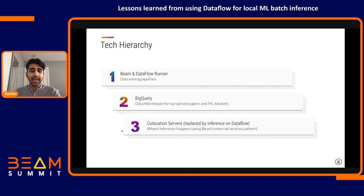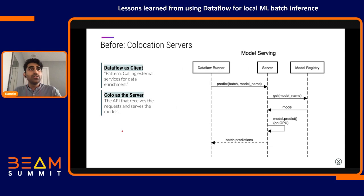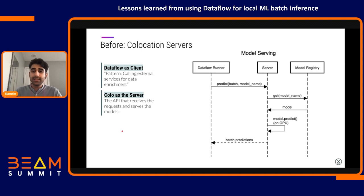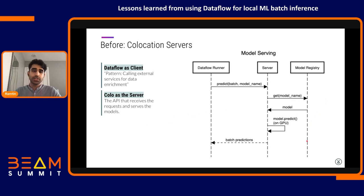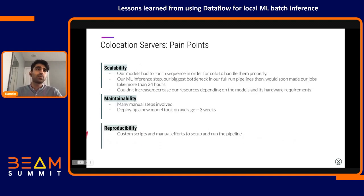Let's look at how we used to do inference on colo before. We used this popular pattern of calling external services. Within our data processing pipelines, we had a step where we sent data in batches to an API server — our colo — which was responsible for downloading models from the model registry, putting them on the GPU, doing the prediction, and sending results back to Dataflow. Working with colo had quite a few challenges, the biggest ones being scalability, maintainability, and reproducibility.